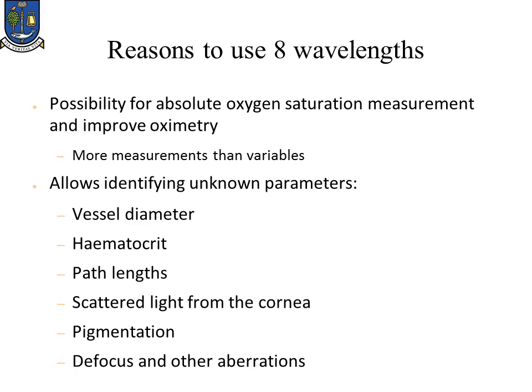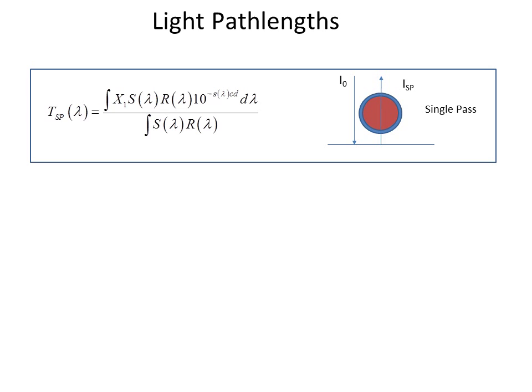First, the path length. We take into account single pass, which is light that is reflected back from the background, passed once through the vessel, which introduces one extra parameter X1. Here, S is the IRIS transmission and illumination, and R stands for the fundus reflectance.